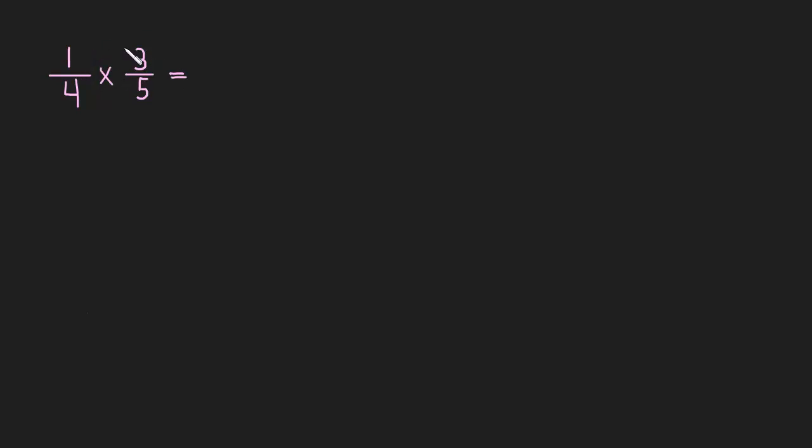All we have to do is multiply the top two numbers, so 1 times 3, which is 3, and then divide by multiplying the bottom two numbers. So 4 times 5 is 20.